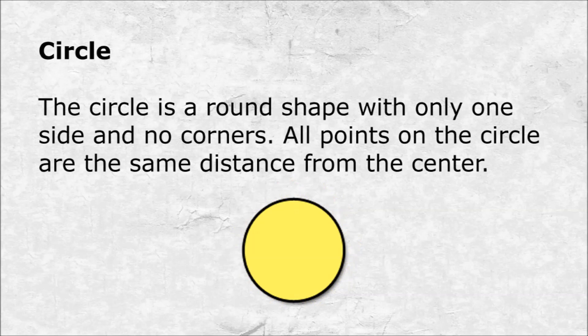Circle. The circle is a round shape with only one side and no corners. All points on the circle are the same distance from the center.